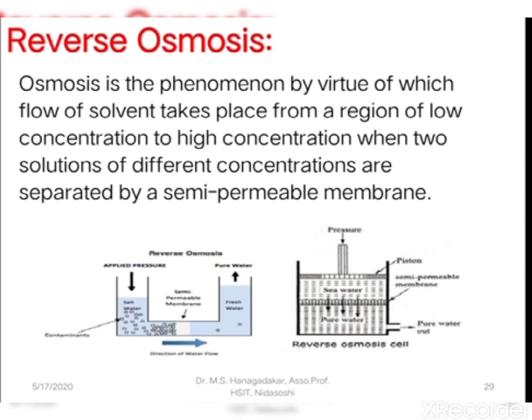Let us discuss the reverse osmosis process. Osmosis is the phenomenon by which the solvent moves from the region of lower concentration to the higher concentration solution side when two solutions are separated by a semi-permeable membrane. In the reverse osmosis process, pressure is applied on the higher concentration solution side. As a result, the flow of solvent molecules takes place from the higher concentration solution side to the lower concentration side through the semi-permeable membrane.